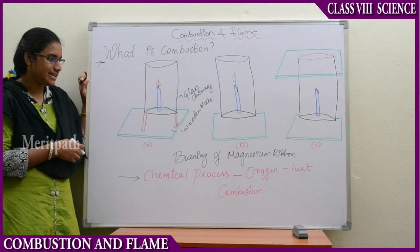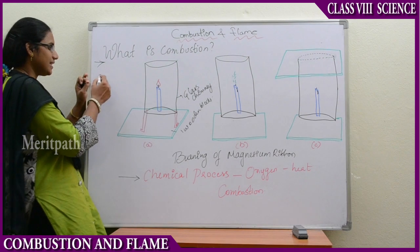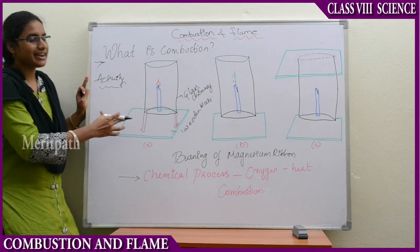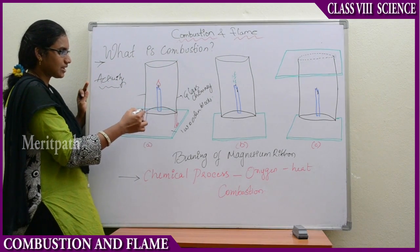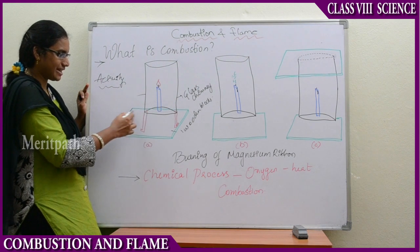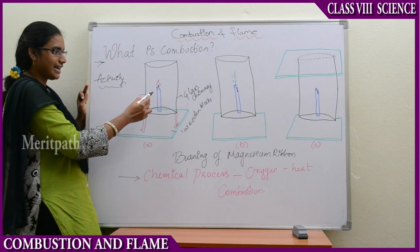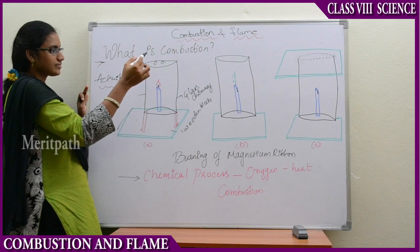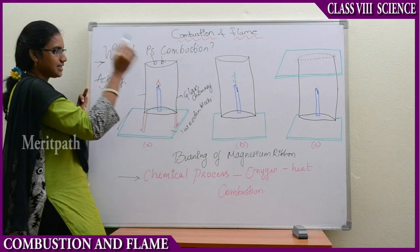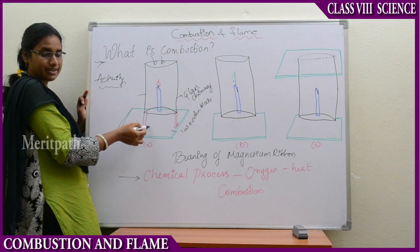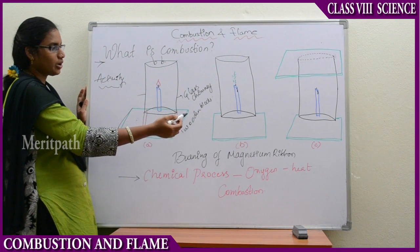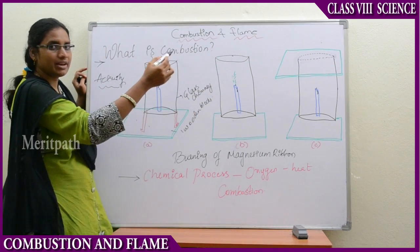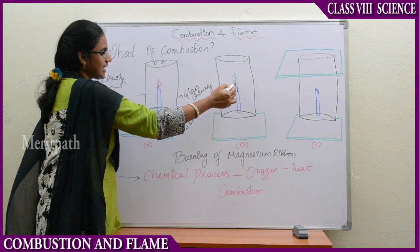Now let us see an activity to understand the combustion process clearly. I have taken 3 candles, 3 chimneys and 3 wooden blocks. I have placed a lit candle and placed a chimney on it and made some holes such that air enters. The candle is burning in the first experiment. In the second experiment, I have removed the holes and made only a partial opening, so the flame is slightly burning.